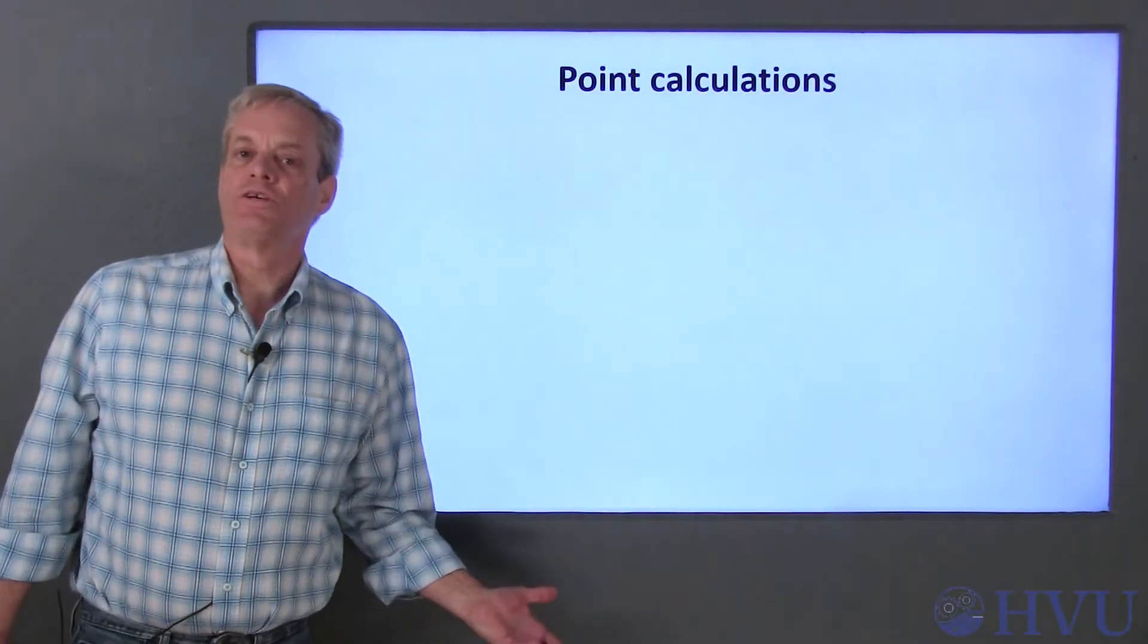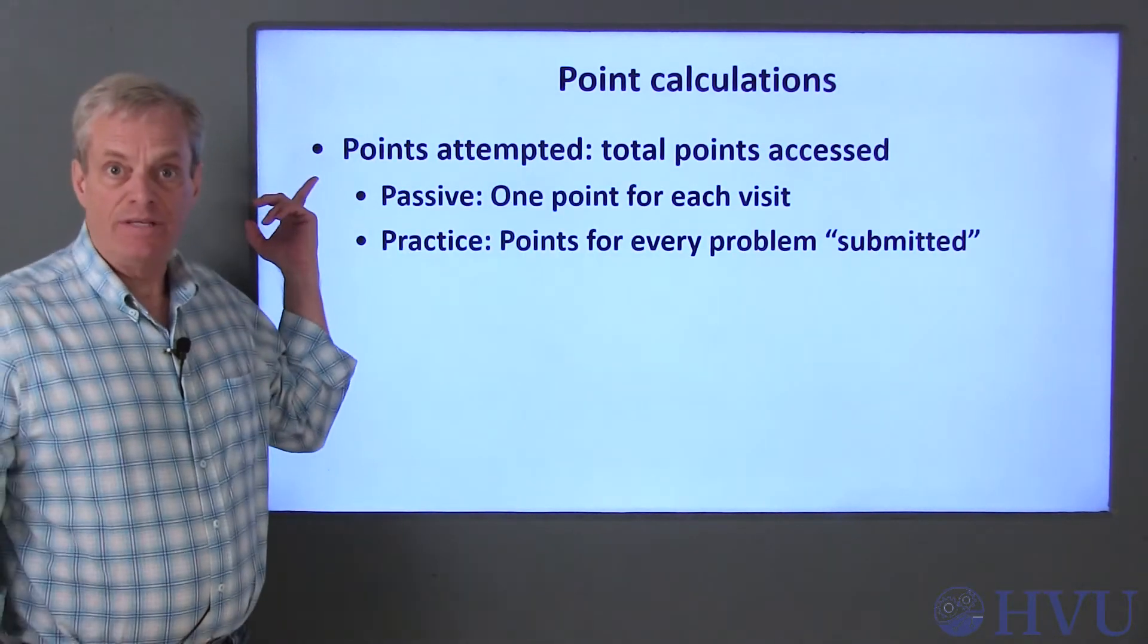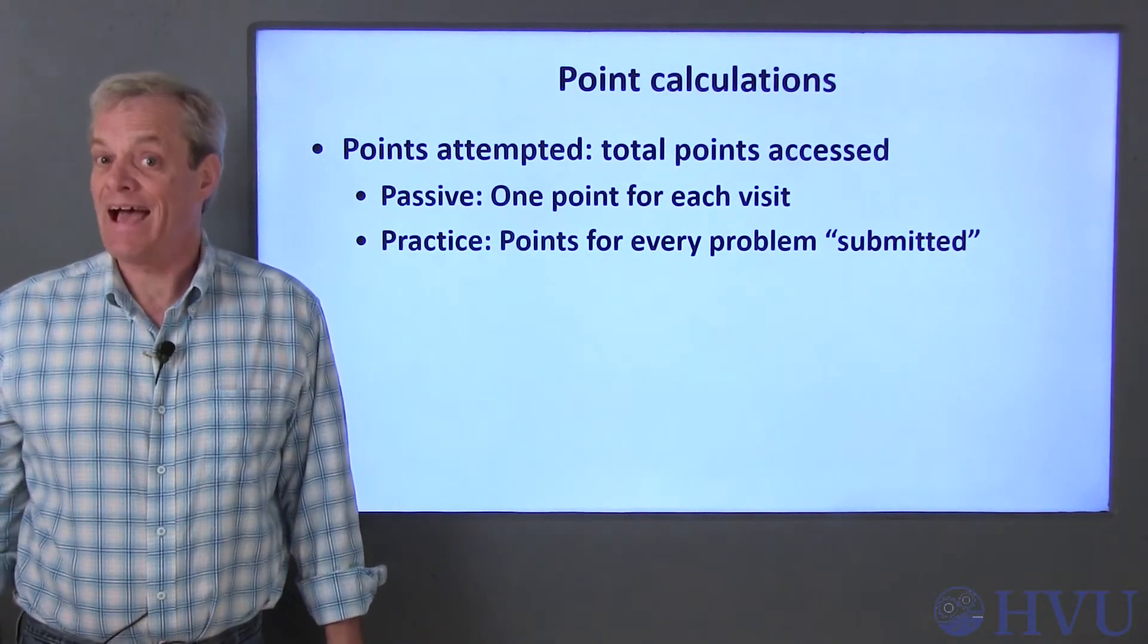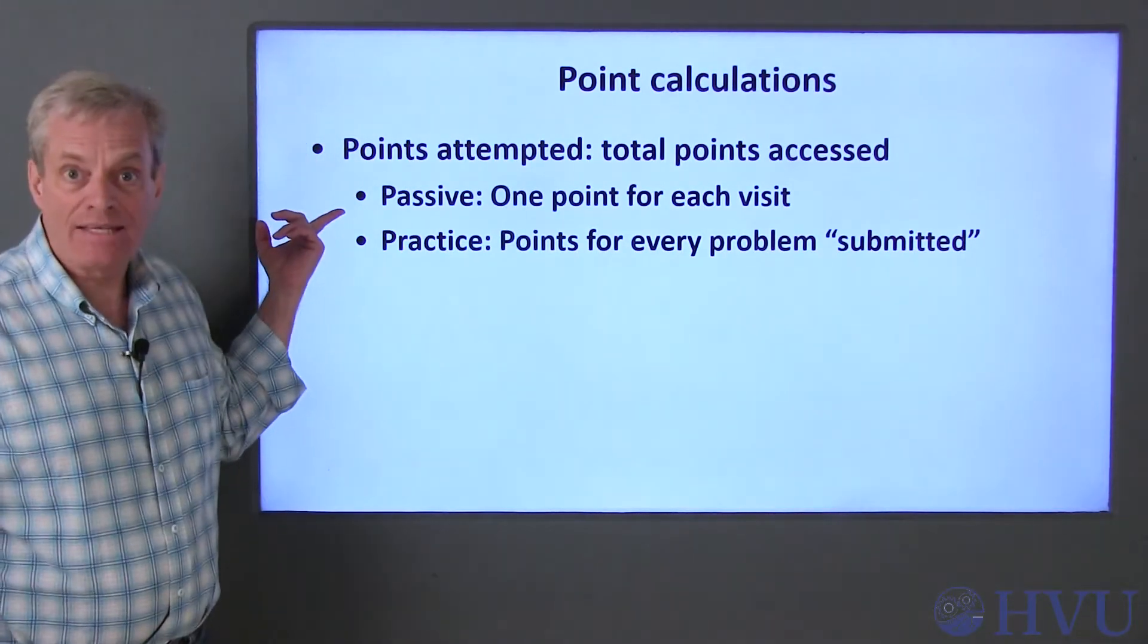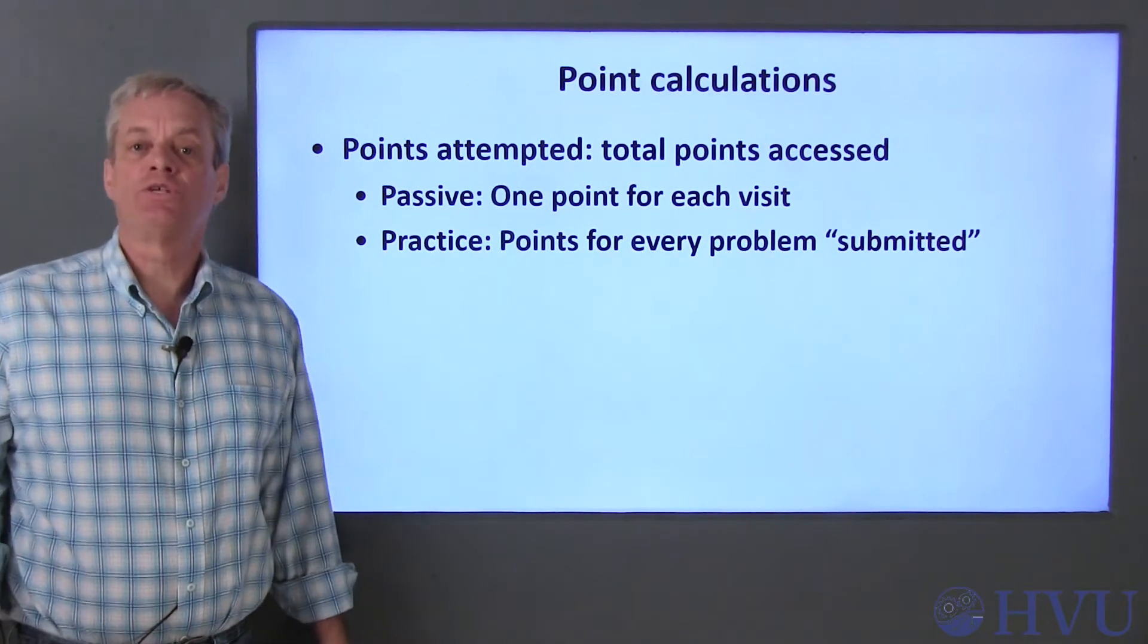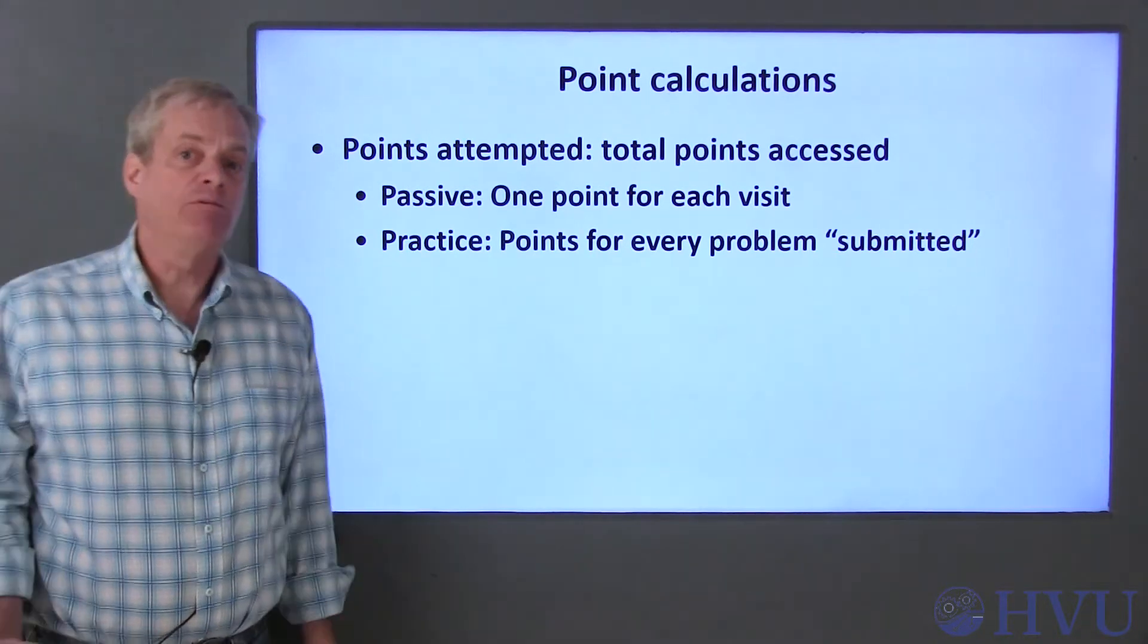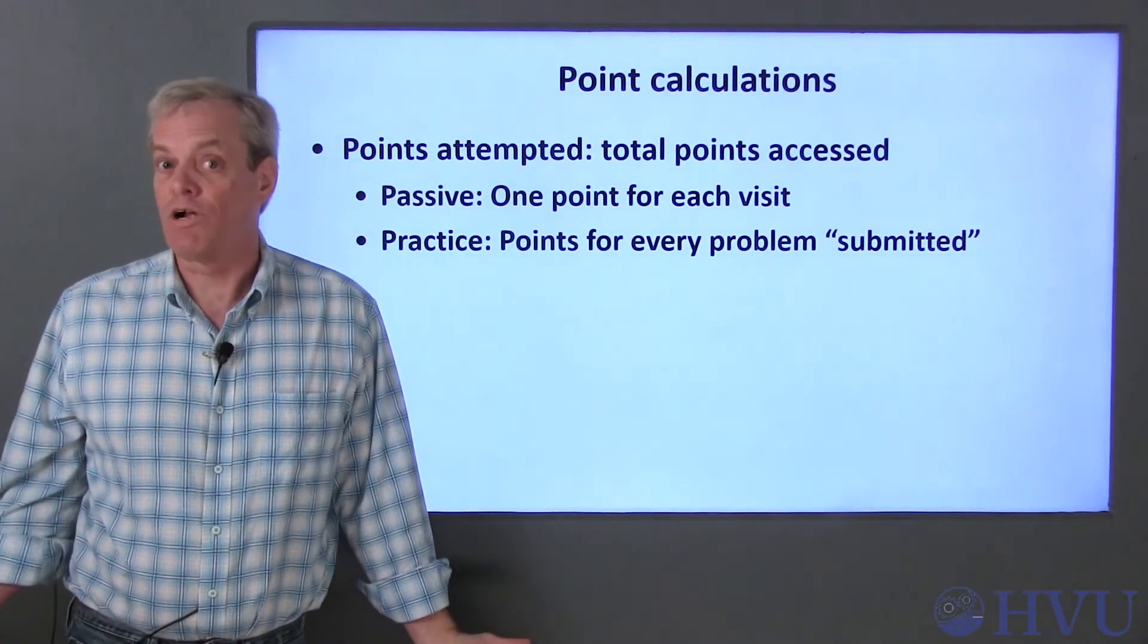Now, let's look at the point calculations in a little more detail. The number of points attempted is simply the total number of points the student would receive if they correctly solved all the problems they accessed. One point is received every time a passive activity is accessed. Points attempted also include the total cumulative points for all practice problems for which the student clicks the submit button. A problem is not indicated as attempted simply because the student looks at the problem.